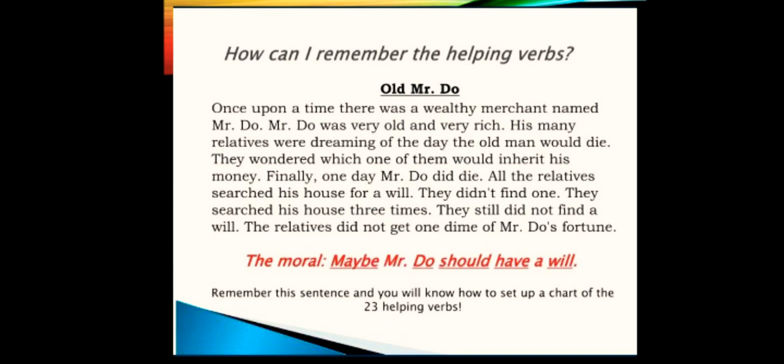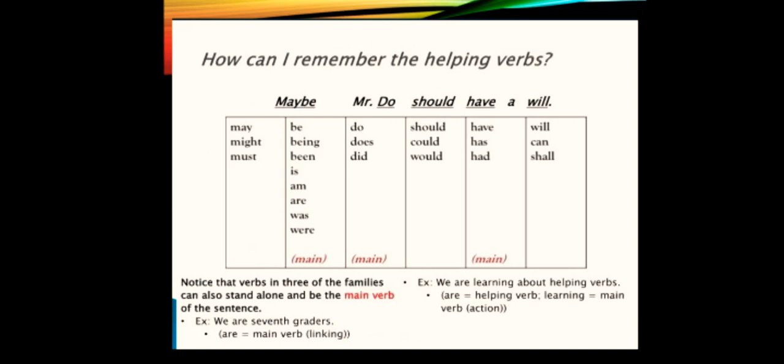The moral of the story: maybe Mr. Do should have a will. This sentence is important. You have to remember this sentence because with the help of this sentence you will remember the 23 helping verbs. May be Mr. Do should have a will. May, might, must - these are the M forms. B - being. Is, am, are, was, were - these are the B forms. Do, does, did. Should, could, would. Have, has, had. Will, can, shall.